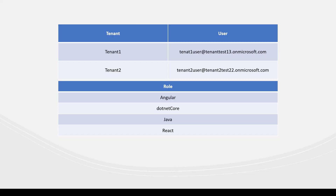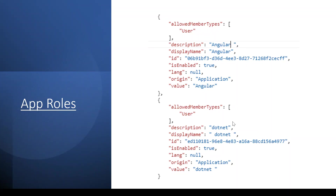Before jumping into how we implement authorization in code, I want to mention a couple of things. First, I have already created two tenants — tenant one and tenant two — and their respective users in Azure Active Directory. If you want to understand how to create a tenant, check my authentication video. In this application, I will be creating a few roles named Angular, .NET Core, Java, and React, which are required for the authorization part. To achieve the authorization, I have to add some code in the app roles section of the application manifest.